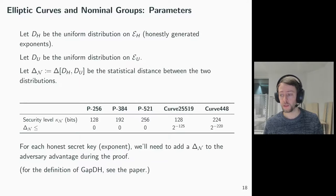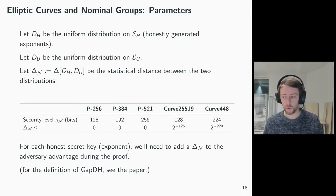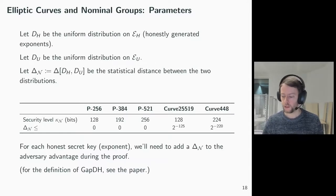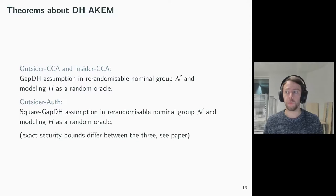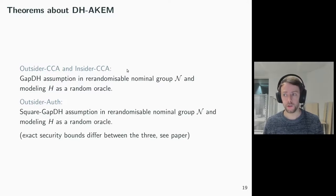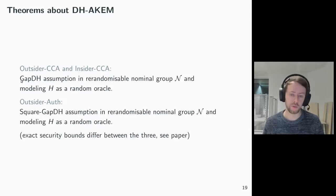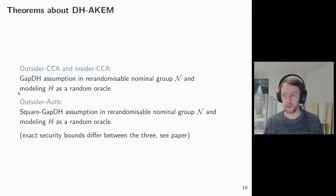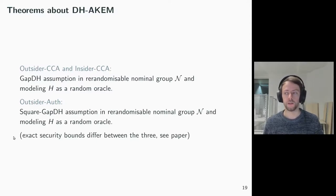For the exact definition of gap Diffie-Hellman and square gap Diffie-Hellman for re-randomizable nominal groups, please have a look at the long version of the paper on ePrint, as we made some updates recently. The theorems we prove about the Diffie-Hellman-based authenticated KEM are as follows. We prove outsider and insider CCA security assuming gap Diffie-Hellman in the elliptic curves as re-randomizable nominal groups and by modeling the key derivation function H as a random oracle. For outsider-out, we need the square gap Diffie-Hellman assumption. Please have a look at the paper for the exact security bounds of these three theorems.